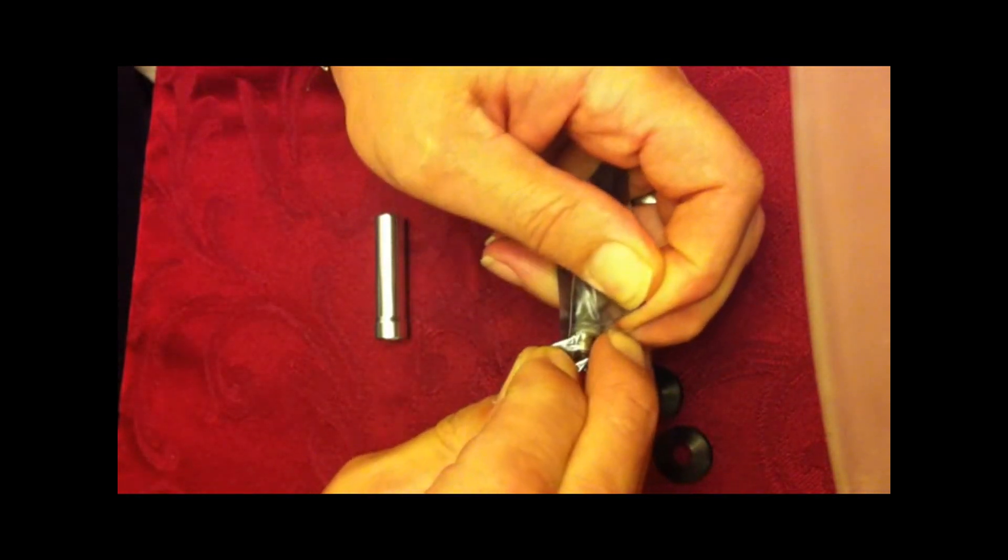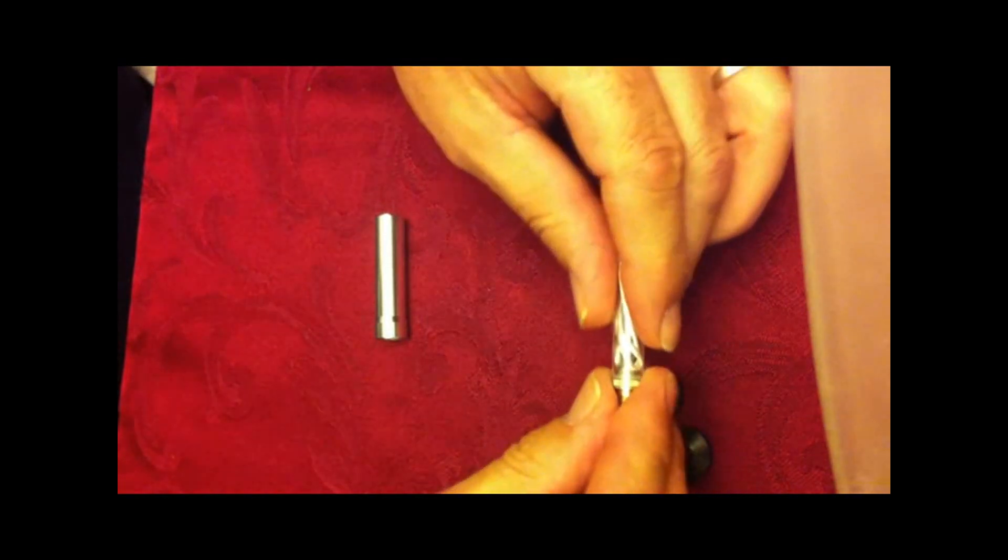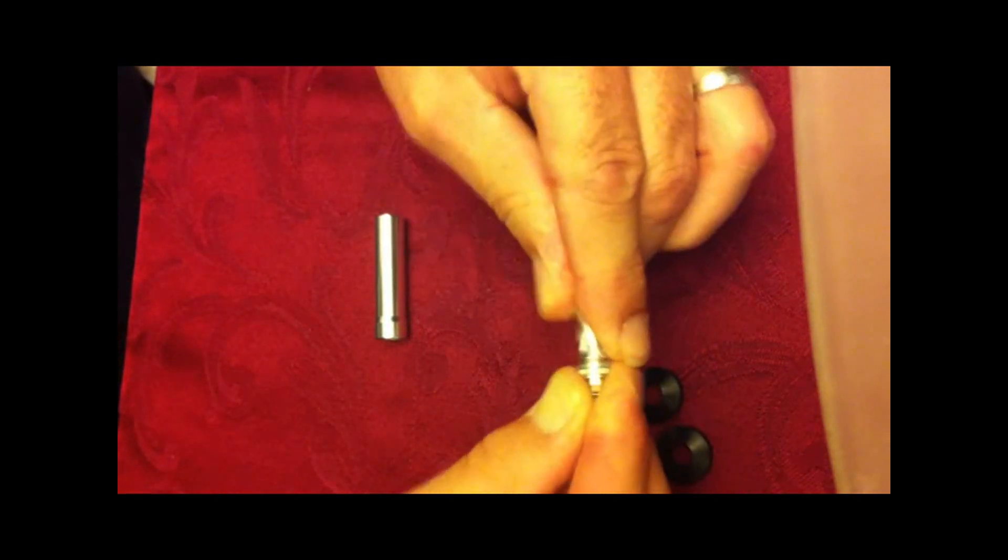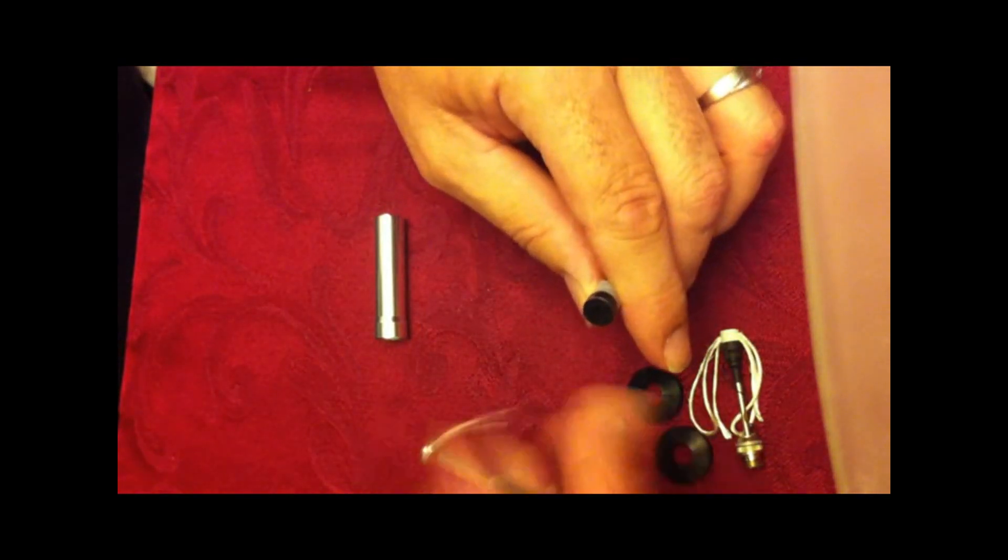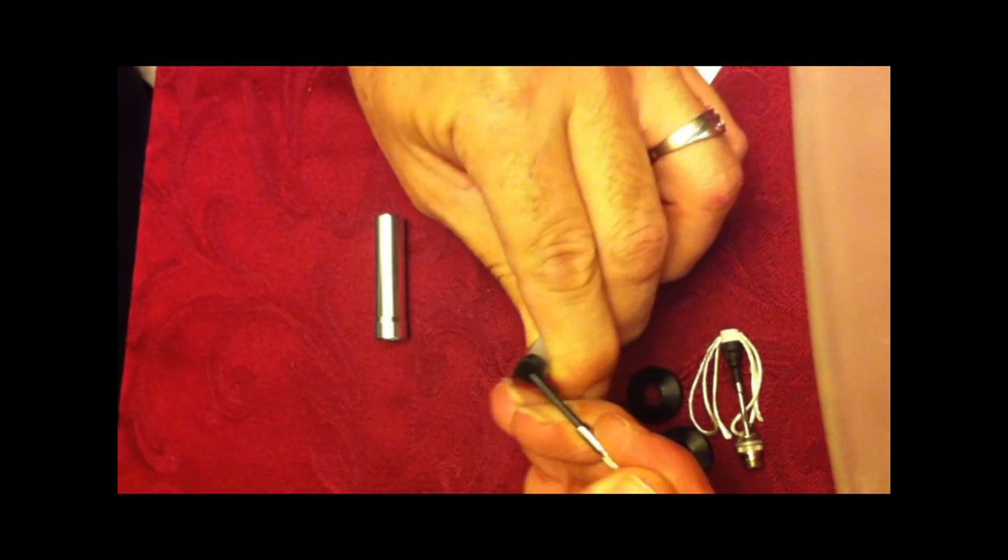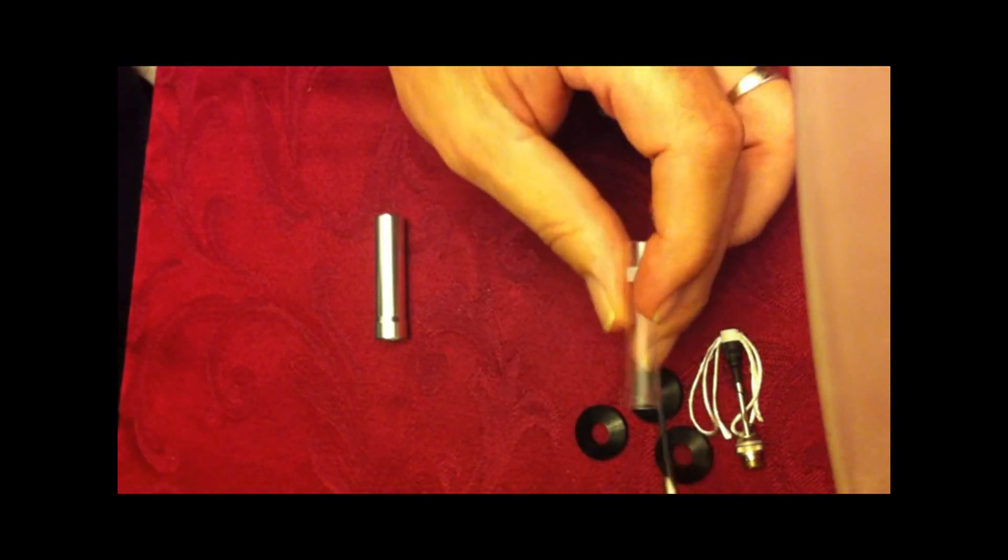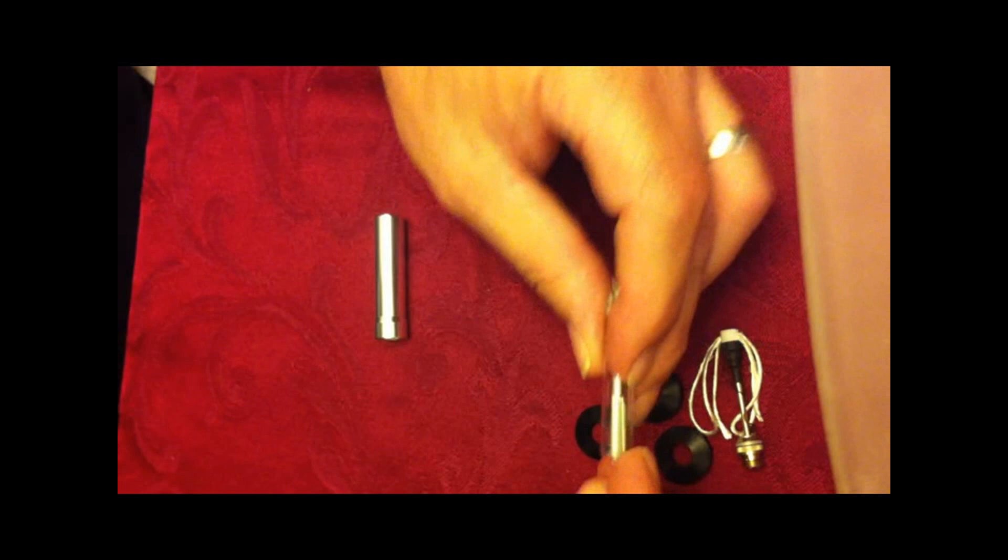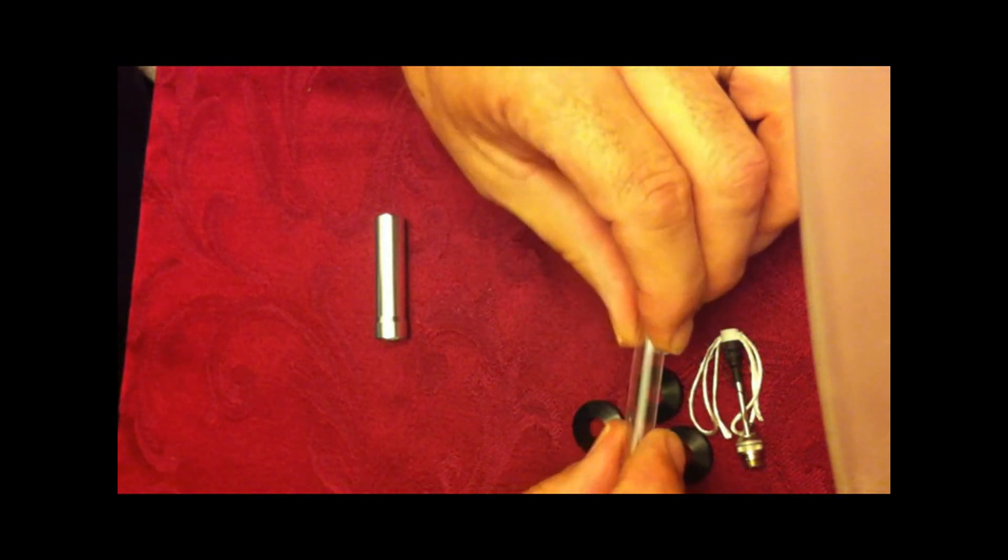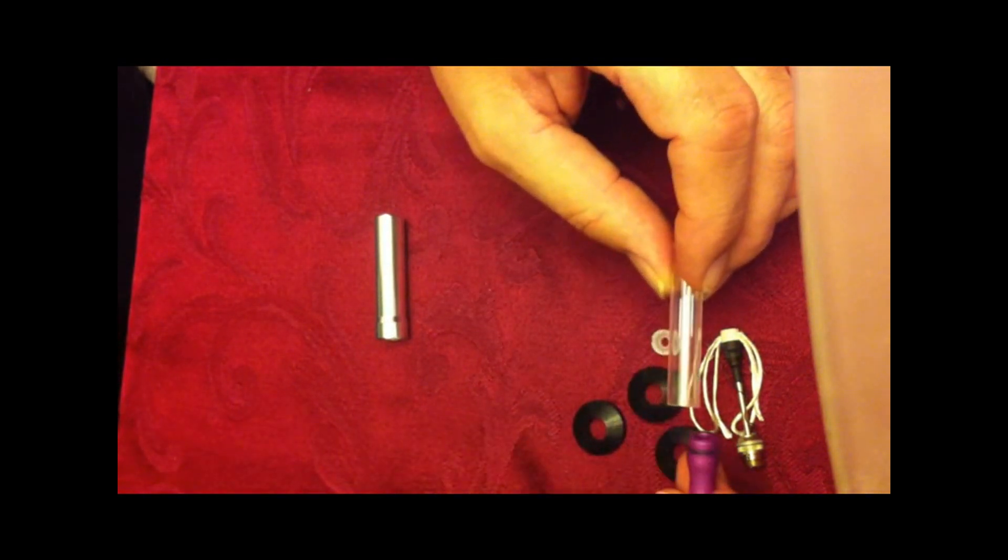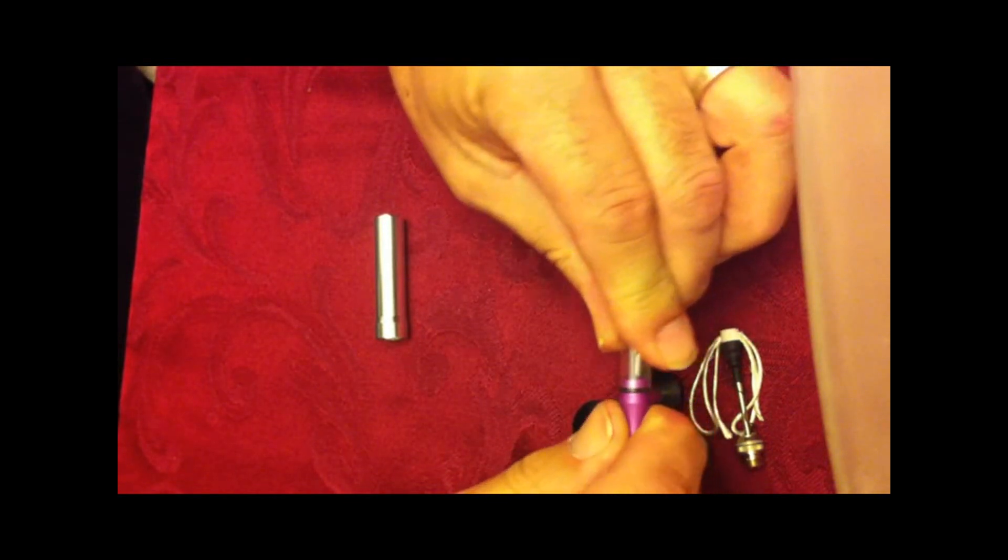We're going to take our XL510 Clearomizer. All we're going to do is wiggle it. And it comes out very easily. Take our top, pop out the little mouthpiece, and pop out the little piece in the bottom. All right. Now, save this. We'll use this as the receiver for our drip tip.